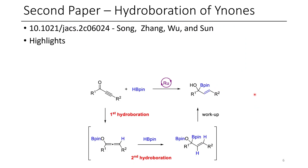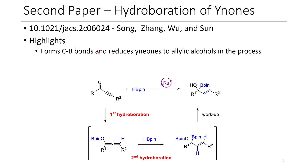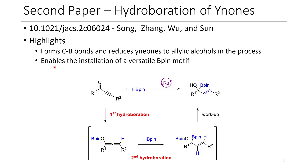The next paper for today is the hydroboration of ynones. This is a paper I like quite a bit, although I am a sucker for boron chemistry. One of the highlights of this paper is that it forms a carbon-boron bond, and it reduces the corresponding ynones to allylic alcohols in the process, forming a tertiary boron species. It also enables the installation of a versatile B-pin group, which they demonstrate can subsequently be converted into several other analogs.